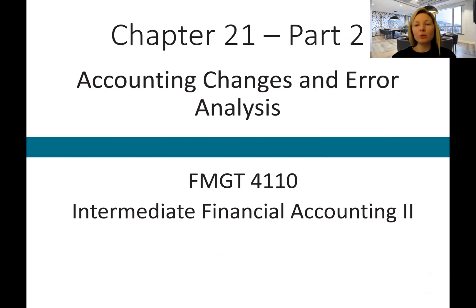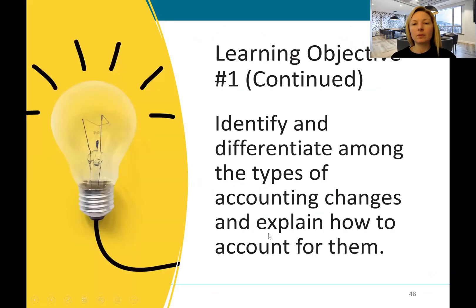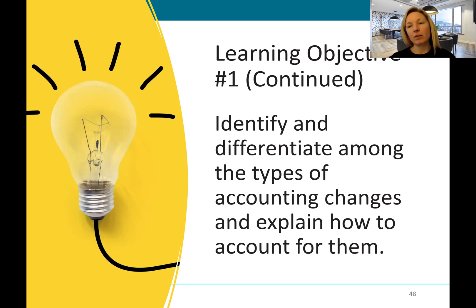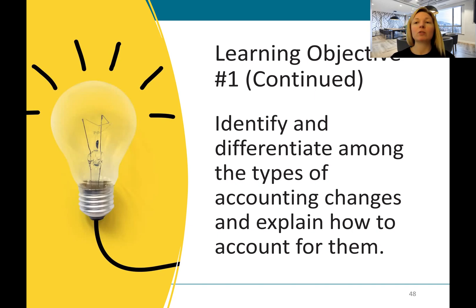Welcome back to chapter 21, part two, where we'll continue looking at the impact of accounting changes and error analysis. We're going to continue on with learning objective number one. In part one of this lecture, we talked about how we retrospectively record the correction of an accounting error or a change in an accounting policy. We worked through a couple of examples, and hopefully you've worked through the other examples in the tutorial section and are feeling comfortable with applying those retrospective policies.